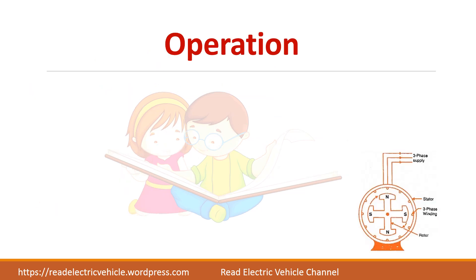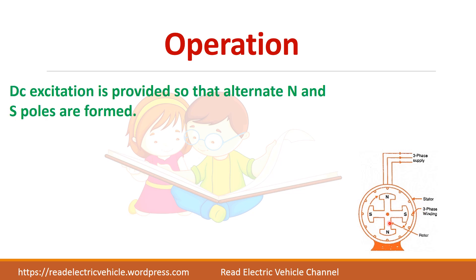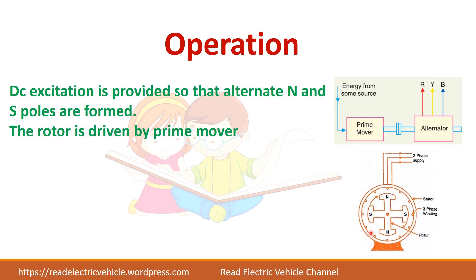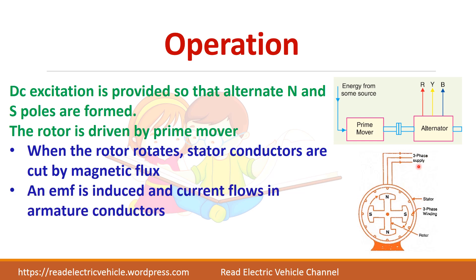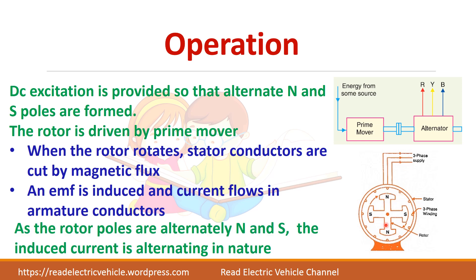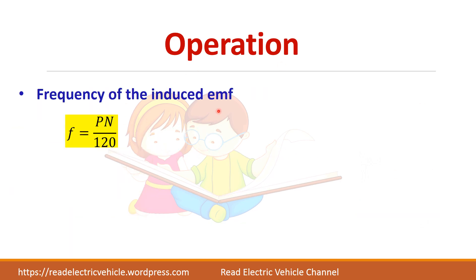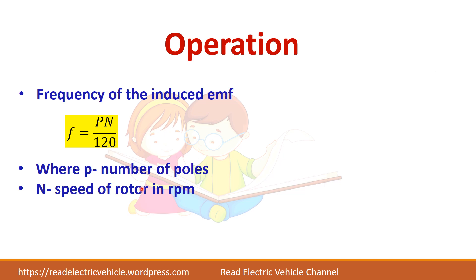Let us see the operation of the alternator. First, give the DC supply to the rotor so that alternating north and south poles are formed, creating a magnetic flux. Using a prime mover, we rotate the rotor. Once the rotor starts rotating, the magnetic flux will cut the stationary armature conductors, so EMF will be induced and current starts to flow. As the rotor poles are alternately north and south, the induced EMF will also be alternating. The frequency of the induced EMF is given by F = PN/120, where P is the number of poles and N is the speed of the rotor in RPM.